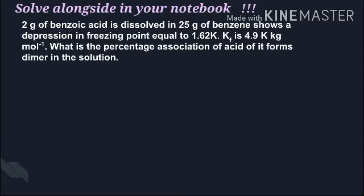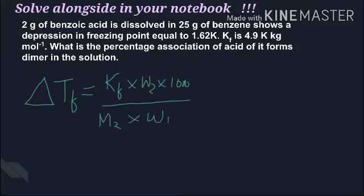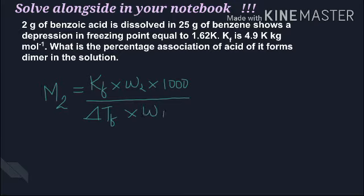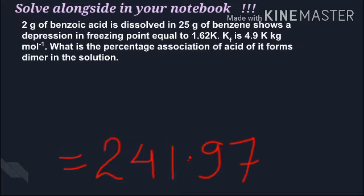First we calculate molar mass because association or dissociation first affects molar mass. Let's calculate the molar mass. The relation is: ΔTf = Kf × w₂ × 1000 / (m₂ × w₁). Delta Tf is 1.62, Kf for benzene is 4.9, w₂ is 2 grams, and w₁ is 25 grams. Calculate m₂.